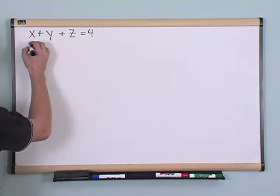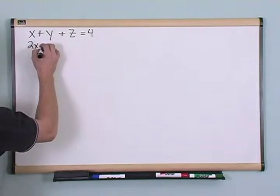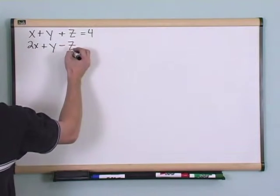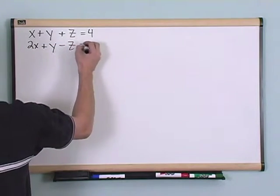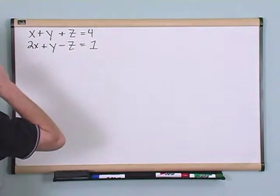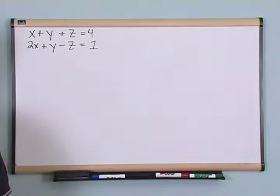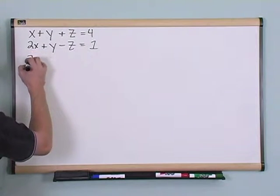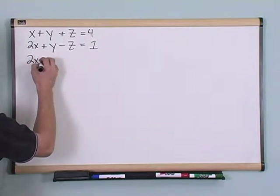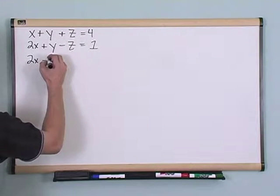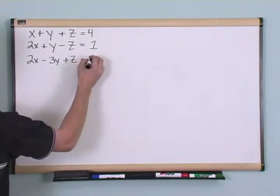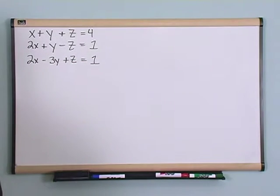Also, I have 2x plus y minus z equals 1. And then lastly, I have 2x minus 3y plus z equals 1.